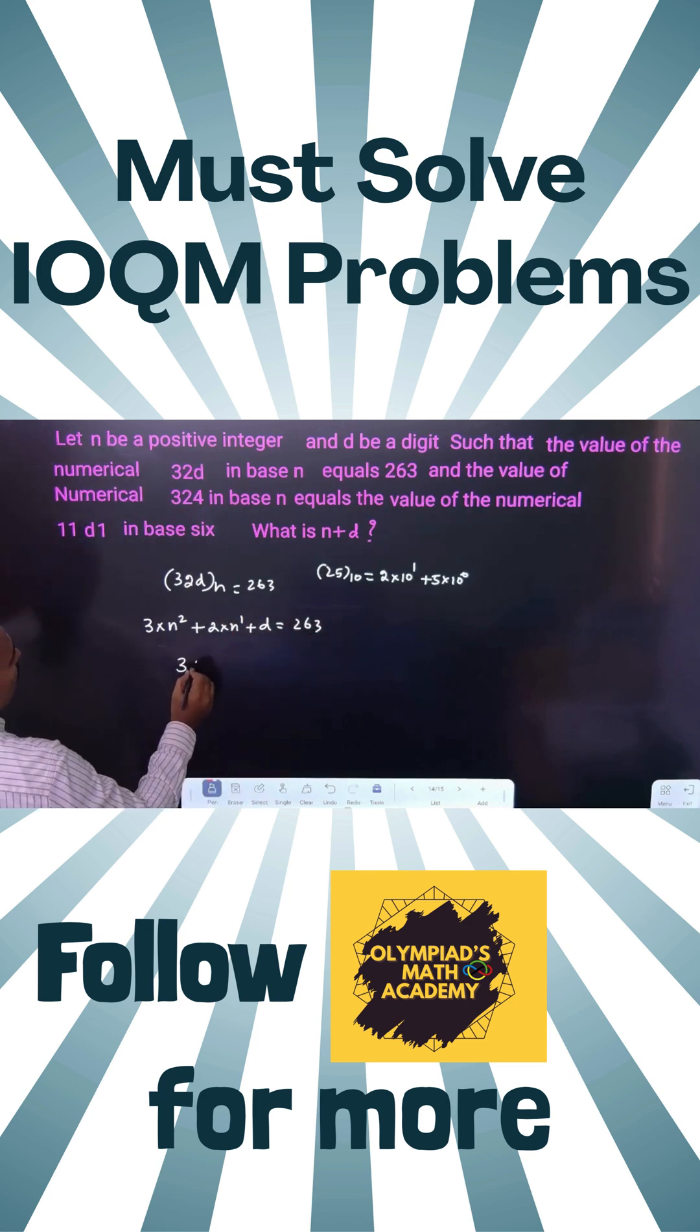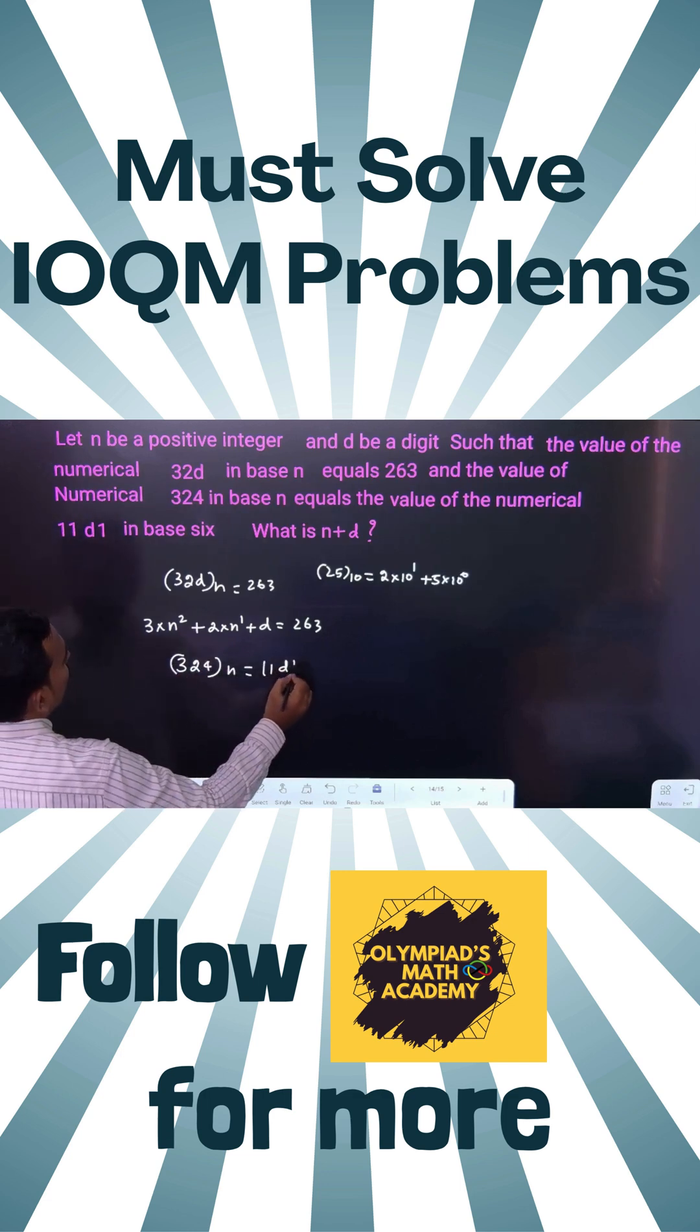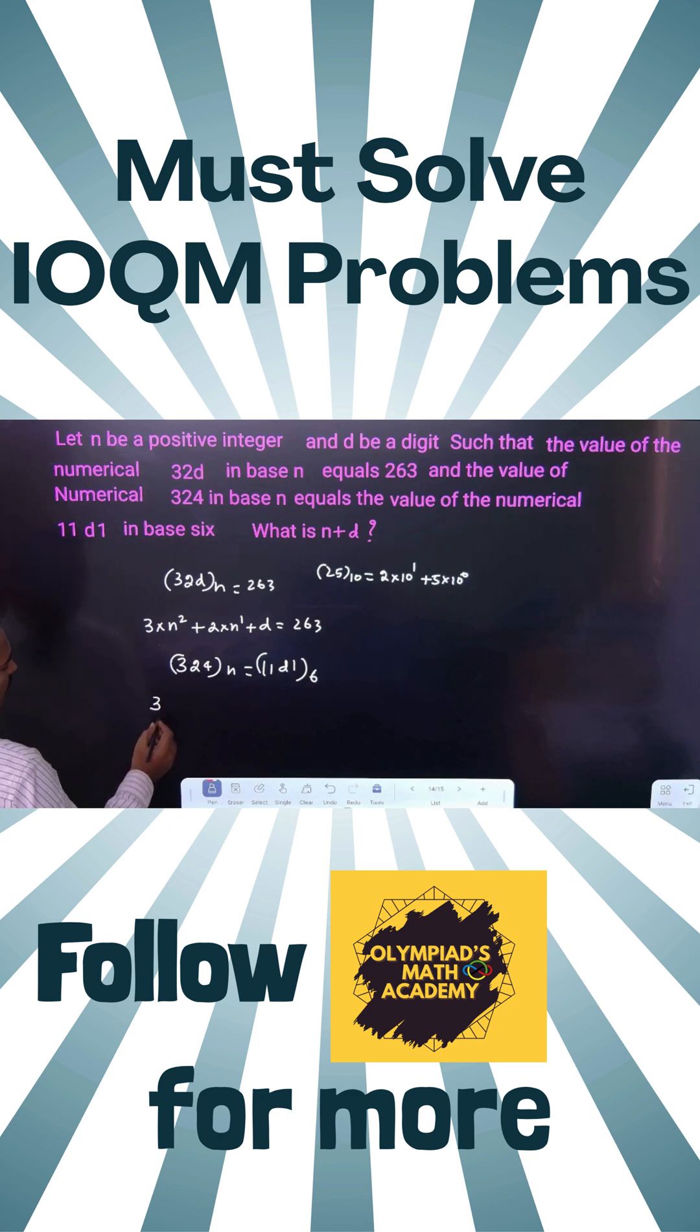The second equation: 324 base n equals 11d1 base 6. Here three digits, you reduce by 1, so 3n² plus 2n plus 4 equals...